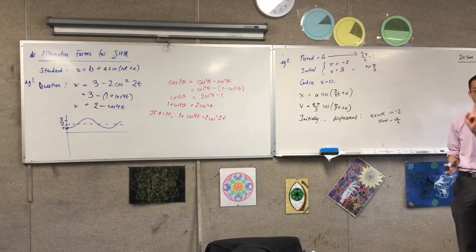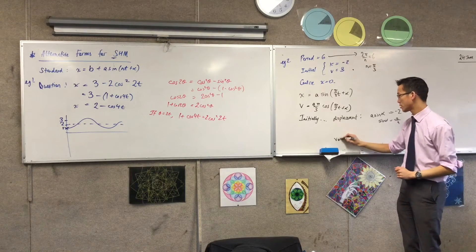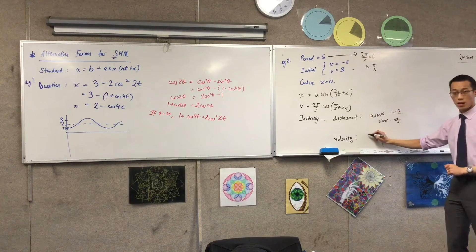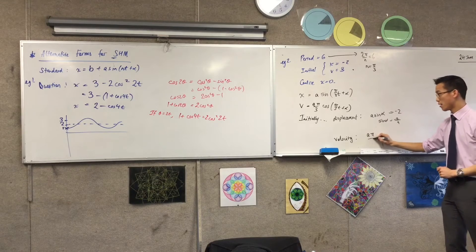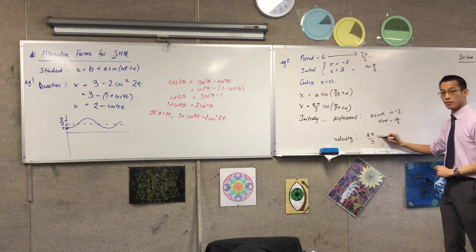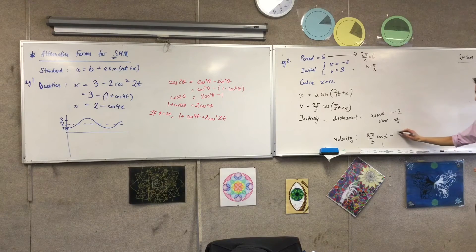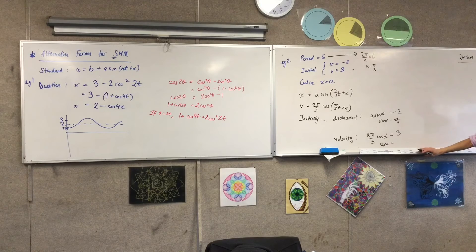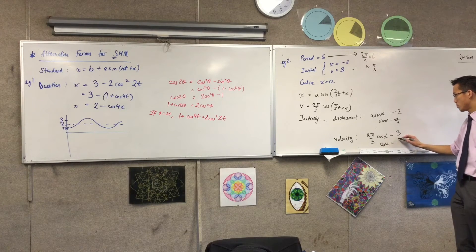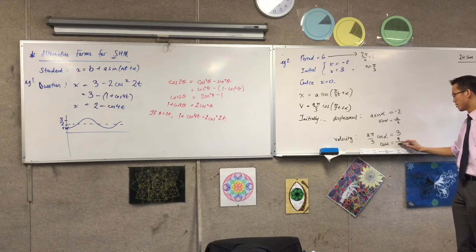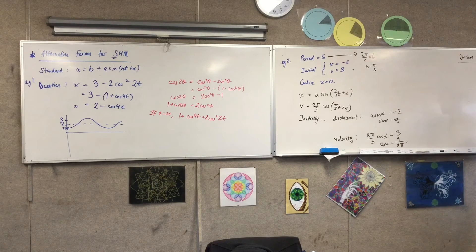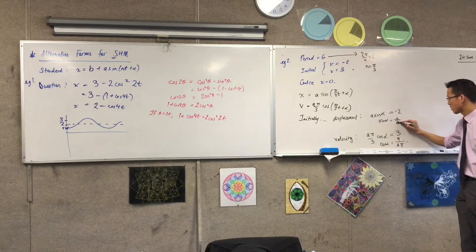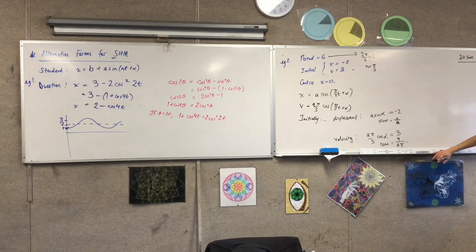So sine alpha is negative 2 on A. So I don't have enough information yet, but that's okay because I have another initial condition, velocity. There's my velocity equation. So what am I going to write here? A π on 3 cos alpha equals 3. Cool. So I can say from this, cos alpha equals 9 on Aπ. That's a negative 2 on A. What do I do with this?